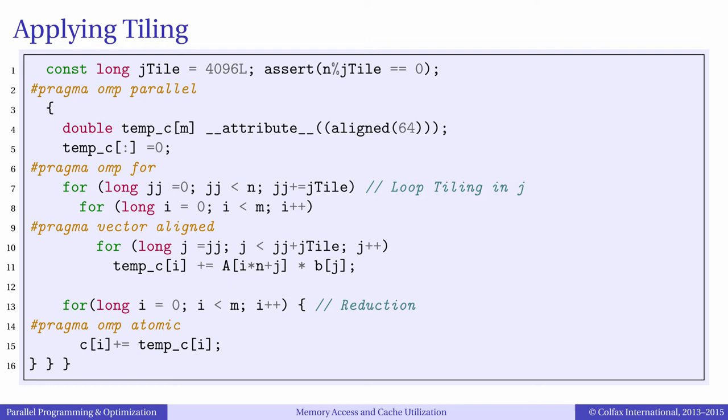Now let's apply cache blocking to this problem as we discussed in the previous episode. With cache blocking the innermost loop will have a length jtile which we found to have an optimal value of 4096.